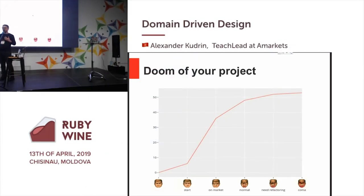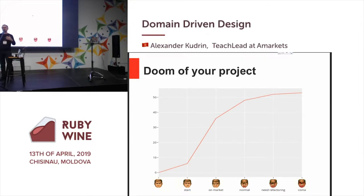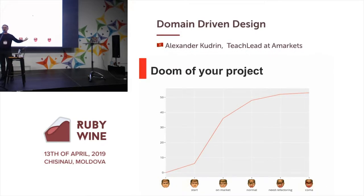Let's look at this graph. This is a really typical story. We have two axes here. The first one is business values — realized use cases, features — you can call it as you want. And the second one is a timeline.